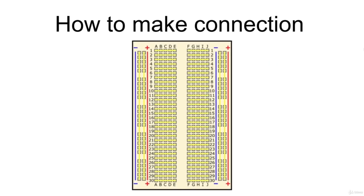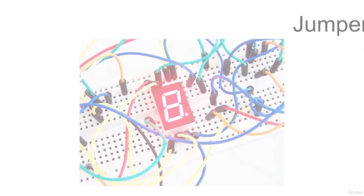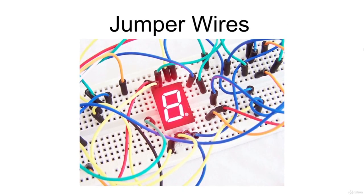This image summarizes how the holes are connected in a typical breadboard. Each yellow line represents a single metal clip, so all the holes on the same line are electrically connected with a single metal strip. In order to make connections between electronic components and the Arduino board, we need to use special prototyping wires called jumper wires, which have stiff ends that are easy to push into the breadboard holes.